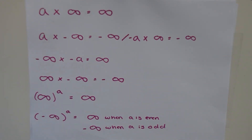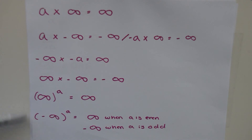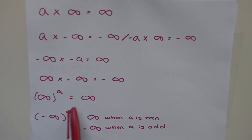For negative infinity raised to the power of 'a', the same rules apply — it's a really really small number multiplied by itself, which again gives infinity in magnitude. However, the sign depends on the value of 'a': if 'a' is even, the outcome is positive infinity; if 'a' is odd, the outcome is negative infinity. The key point is that multiplying two humongous numbers together gives a really really big number we can label as infinity, though the result and the original base are different values.